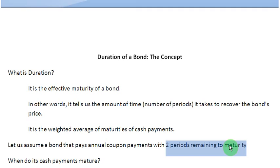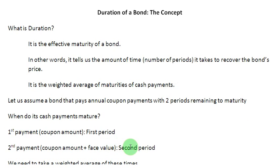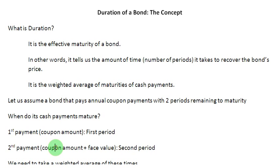The question that we need to ask ourselves is, when do the cash payments from this bond mature? The first payment matures at the end of the first period and the second payment matures at the end of the second period. At the end of the first period we get the coupon amount, and at the end of the second period we get the final payment comprising of the coupon amount and also, since the bond is maturing, its face value.